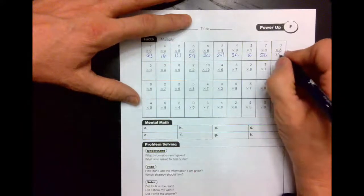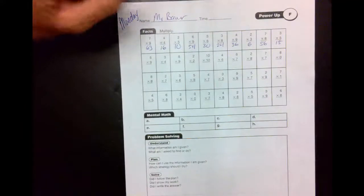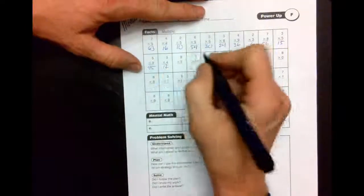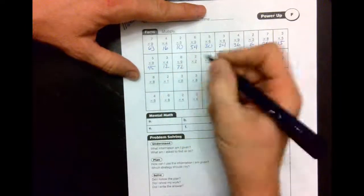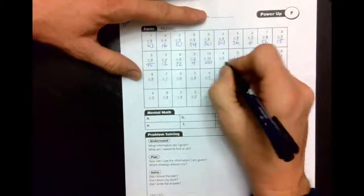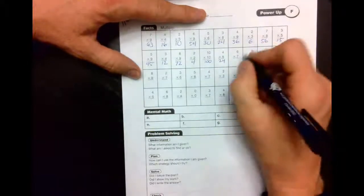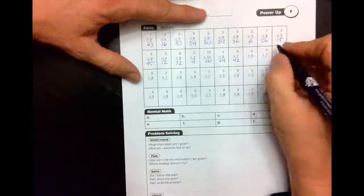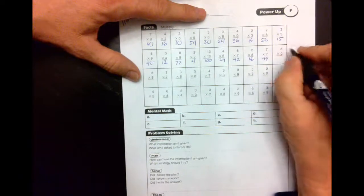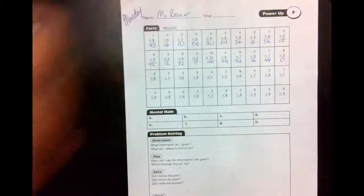5 times 9 is 45, 3 times 4 is 12, 8 times 9 is 72, 2 times 2 is 4, 10 times 10 is 100, 4 times 6 is 24, 6 times 7 is 42, 2 times 8 is 16, 7 times 7 is 49, and 8 times 0 is 0.